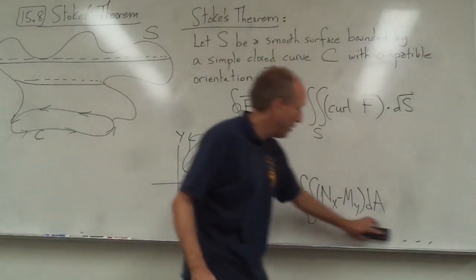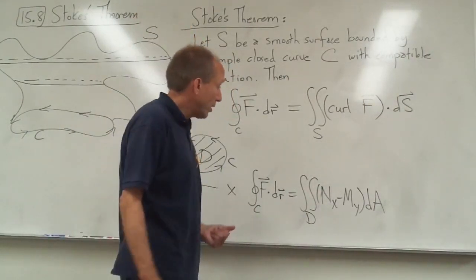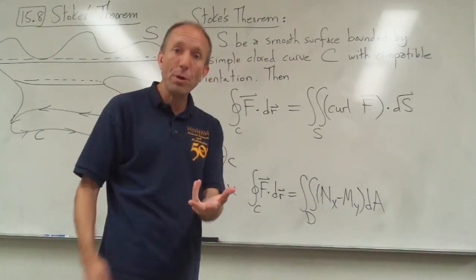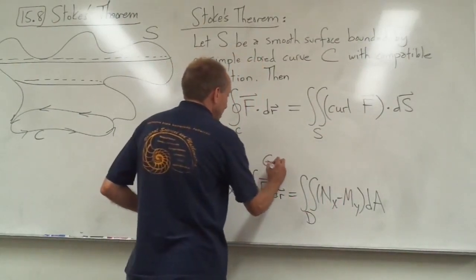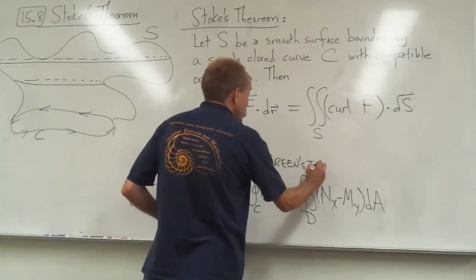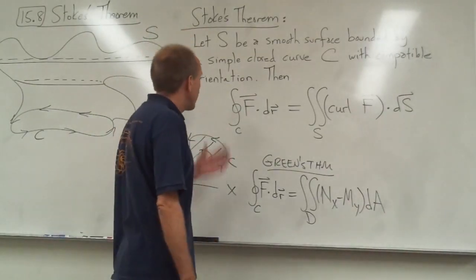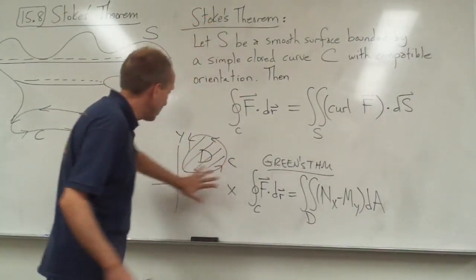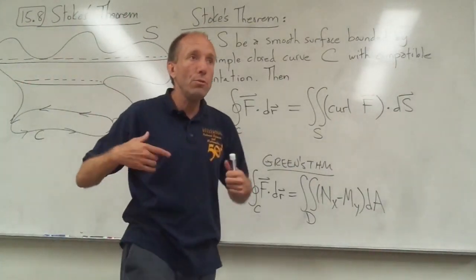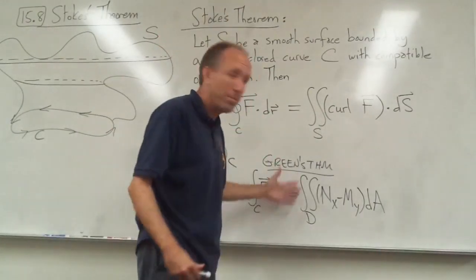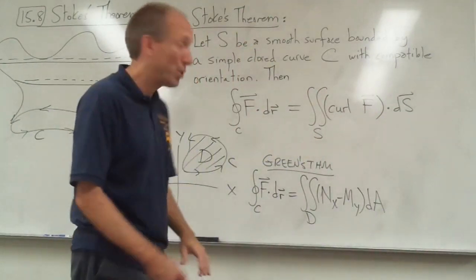Hey guys, sorry, my video just cut off a minute ago, so I've got to do a second little section here. I was just talking about Green's Theorem. In the case of a vector field that only has an M and an N component, the curl of that vector field is really just N sub X minus M sub Y. In other words, Green's Theorem is really just the two-dimensional version of Stokes' Theorem.